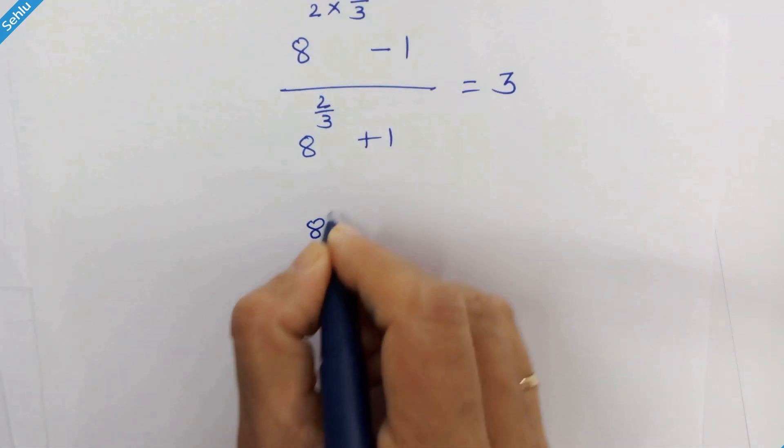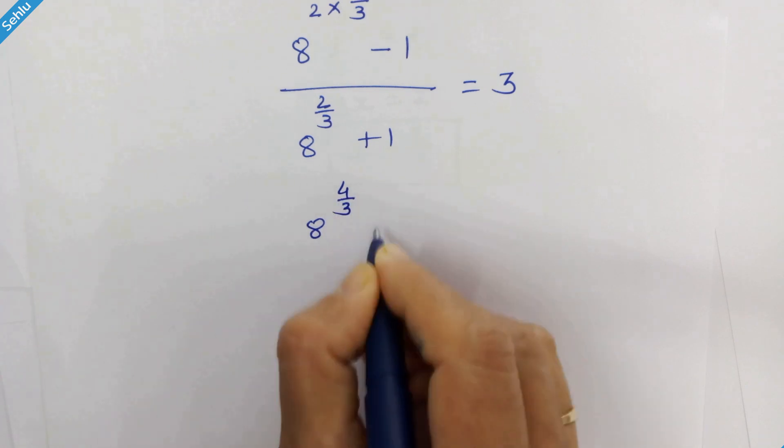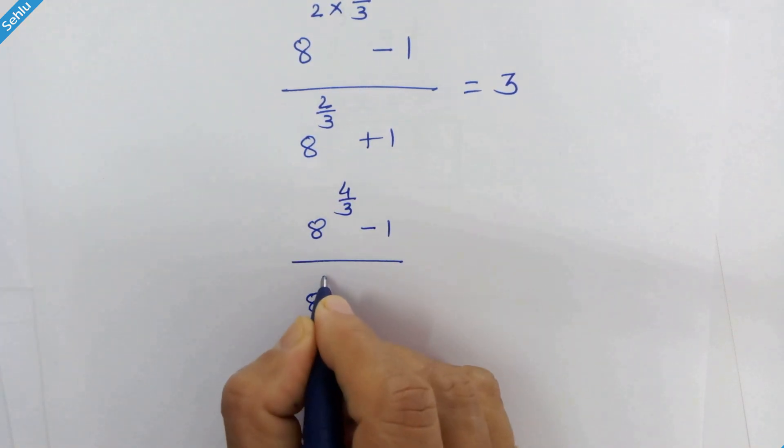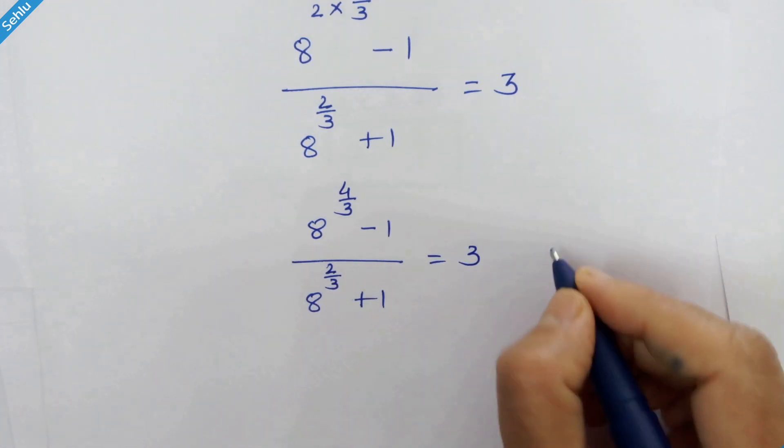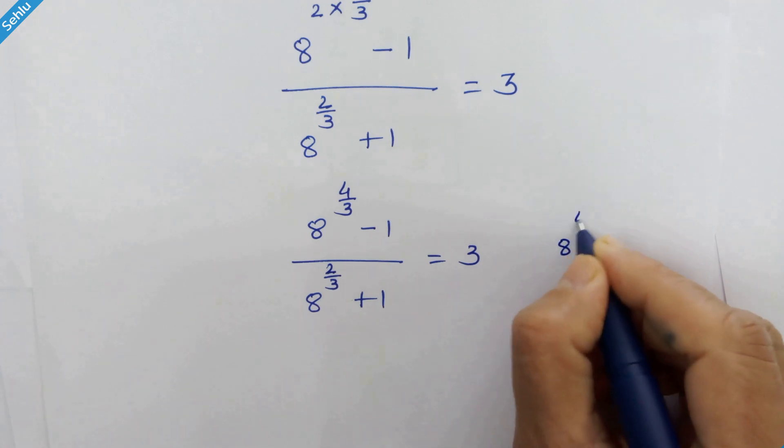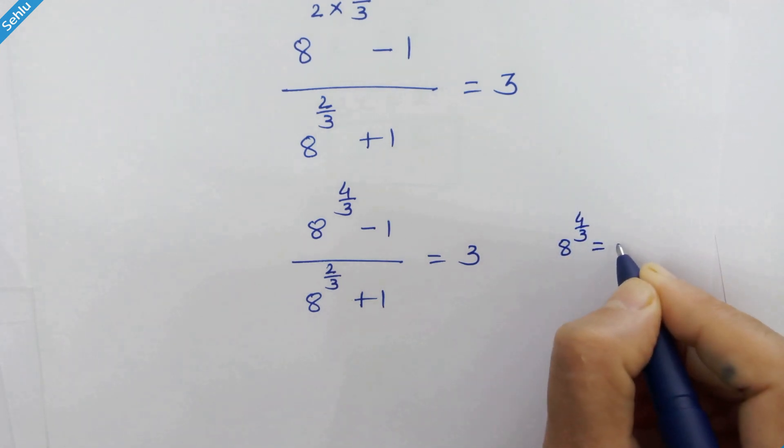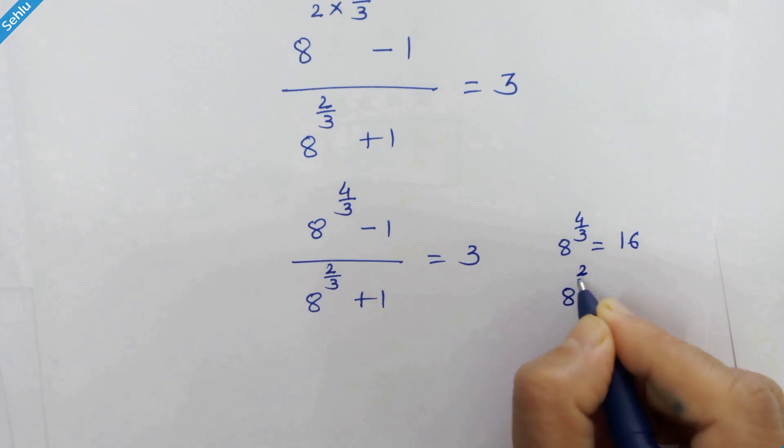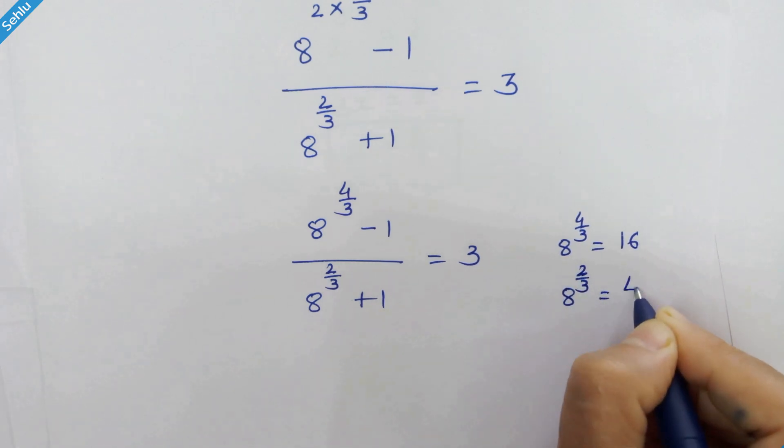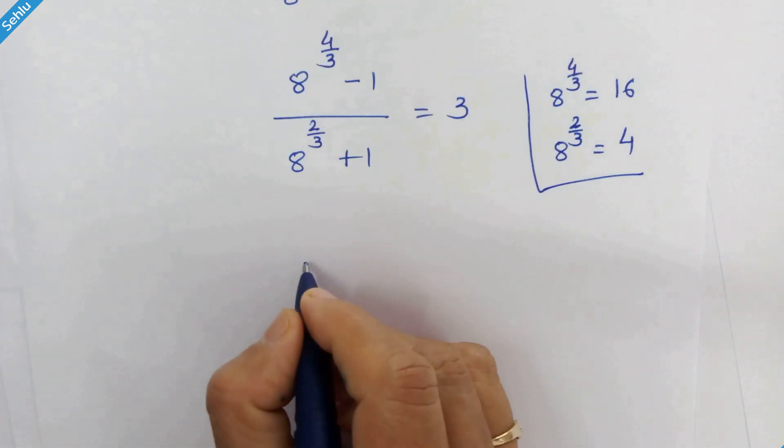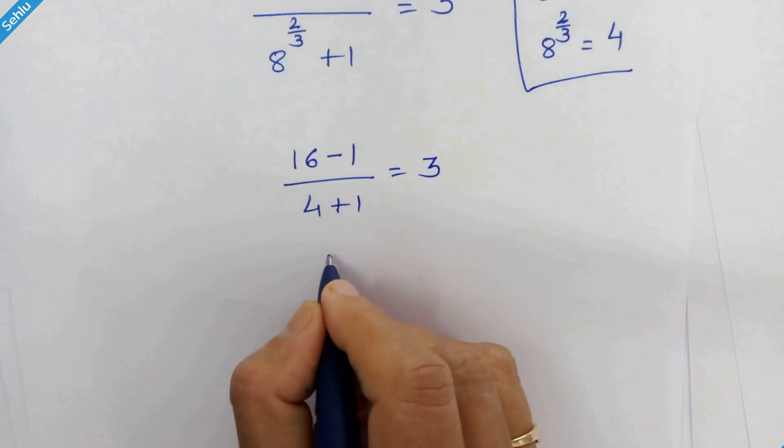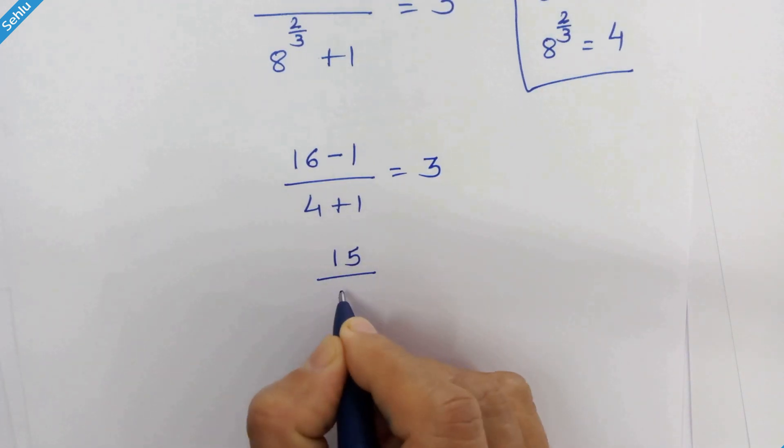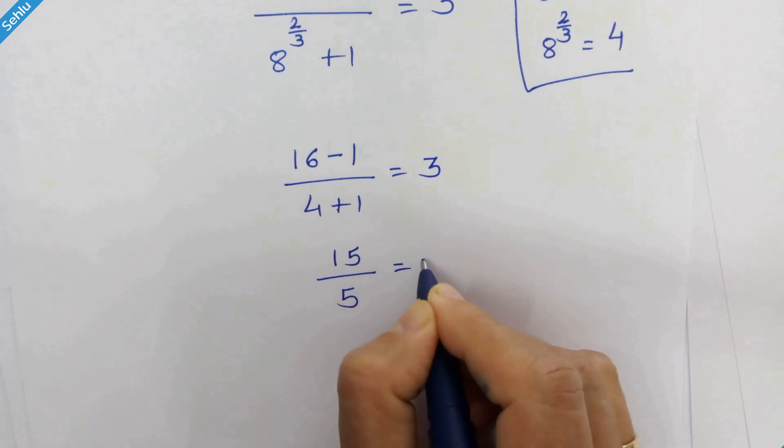So we have 8 raised to 4 upon 3 minus 1 upon 8 raised to 2 upon 3 plus 1. Now 8 raised to 4 upon 3 is 16 and 8 raised to 2 upon 3 is 4. So we have 16 minus 1 upon 4 plus 1 is equal to 3. So 15 upon 5 is equal to 3.